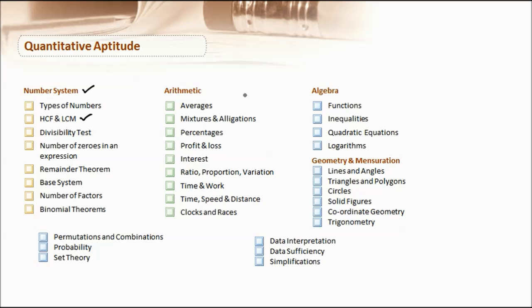Apart from number systems, the important arithmetic section includes topics that require intensive calculation and understanding of concepts. We have averages, which we learned in school. Mixtures and alligations are extensions of averages, applying average concepts in mixtures and alligations.